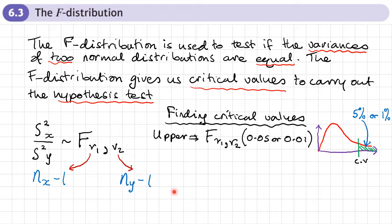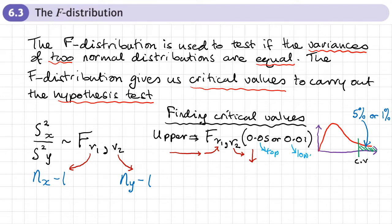For my upper limit, I go across by my first degrees of freedom and down by the second. So if this was five and eight degrees of freedom, you go across to five and then down to eight — it'll be either five percent or one percent. Five percent is the top part of the table and one percent is the lower part. All of these can also be worked out on the CG50. For the upper limit you just look it straight up in the table because the area given is the area on the right.